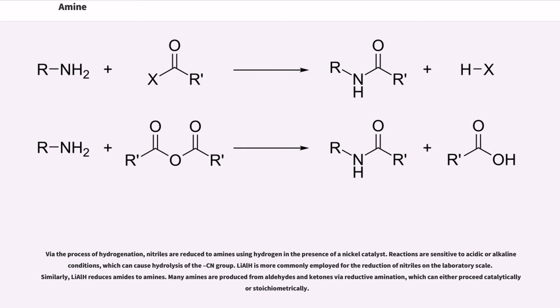Via the process of hydrogenation, nitriles are reduced to amines using hydrogen in the presence of a nickel catalyst. Reactions are sensitive to acidic or alkaline conditions, which can cause hydrolysis of the CN group. LiAlH4 is more commonly employed for the reduction of nitriles on the laboratory scale. Similarly, LiAlH4 reduces amides to amines.